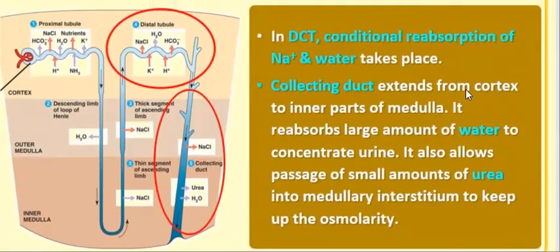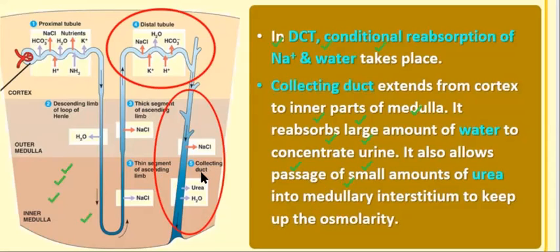In the distal convoluted tubule, DCT, reabsorption of sodium and water takes place again. The collecting duct extends deep into the medulla, where a large amount of water is reabsorbed, producing concentrated urine. It also allows passage of small amounts of urea into the medullary interstitium to maintain the osmolarity of the kidneys.